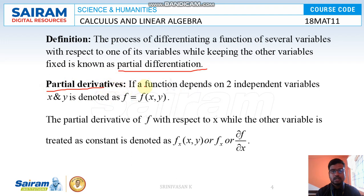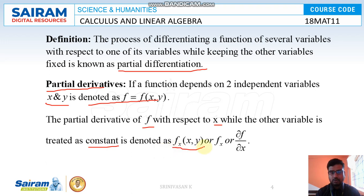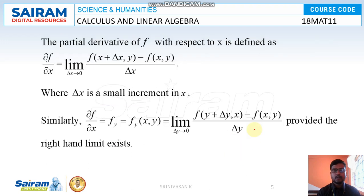What is the partial derivative? If a function depends on two independent variables x and y, denoted by f = f(x, y), the partial derivative of f with respect to x — while the other variable is treated as a constant — is denoted by f_x, or ∂f/∂x. It is defined as: ∂f/∂x = lim(Δx→0) [f(x + Δx, y) − f(x, y)] / Δx, where Δx is the small increment in x.